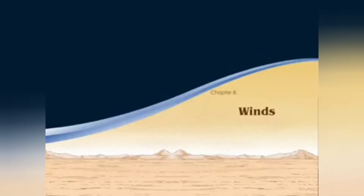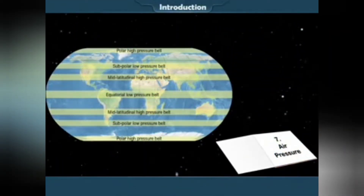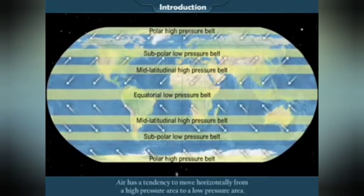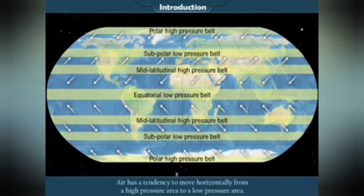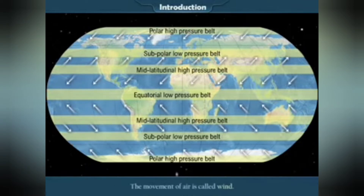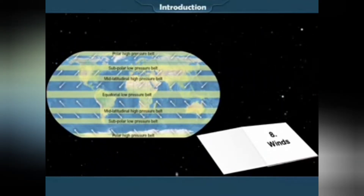Chapter 8: Winds. Introduction. Dear students, we have already studied air pressure. Some regions on earth experience high air pressure and some other regions experience low air pressure. Air has a tendency to move horizontally from a high pressure area to a low pressure area. The movement of air is called wind. In this lesson we are going to study wind in detail.